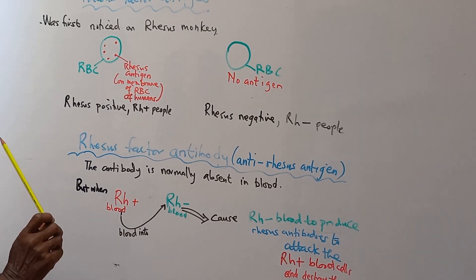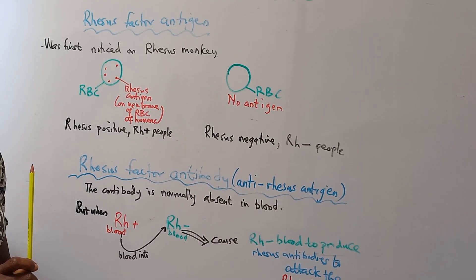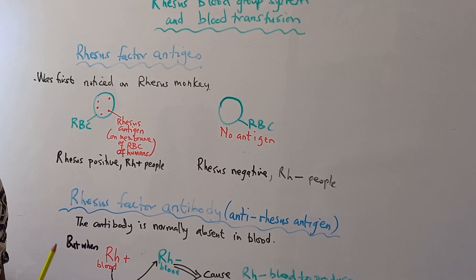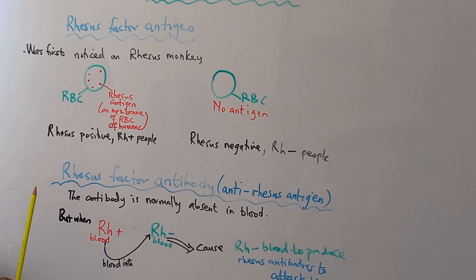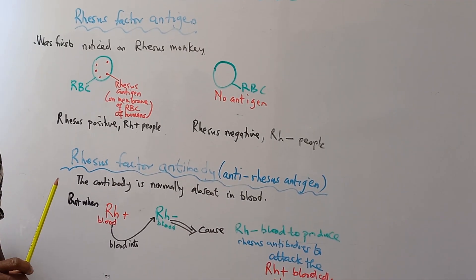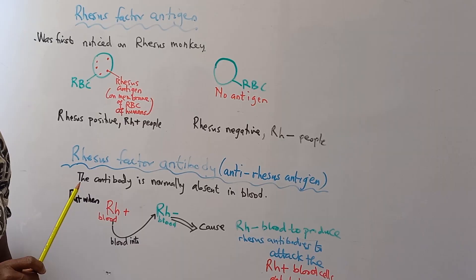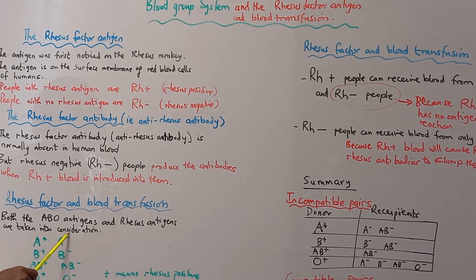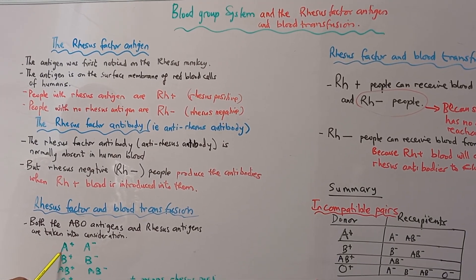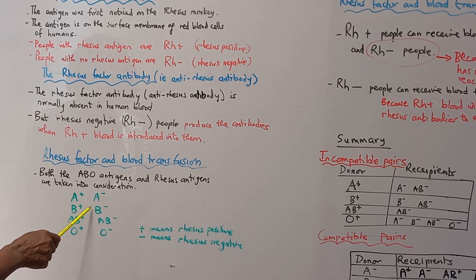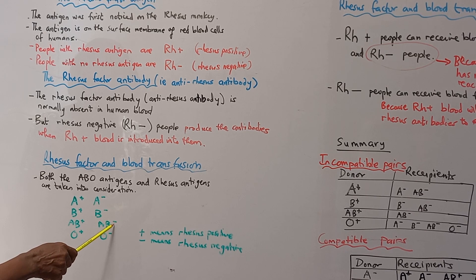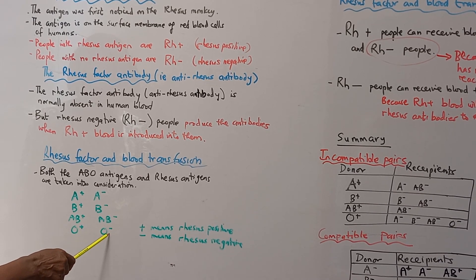So in blood transfusion, both the ABO agglutinogens and agglutinins, as well as the Rhesus factor antigen, need to be taken into consideration. And so blood groups are seen as either A positive or A negative, B positive, B negative, AB positive, AB negative, O positive, O negative.